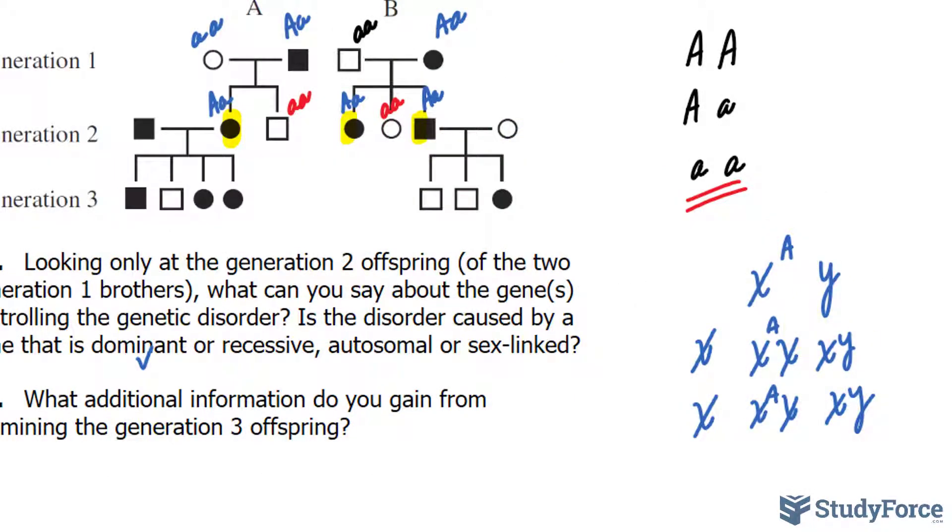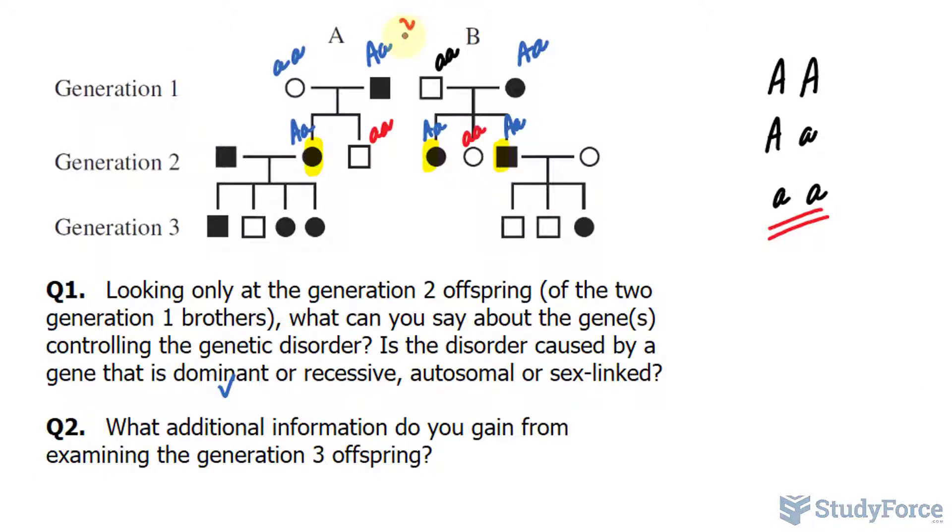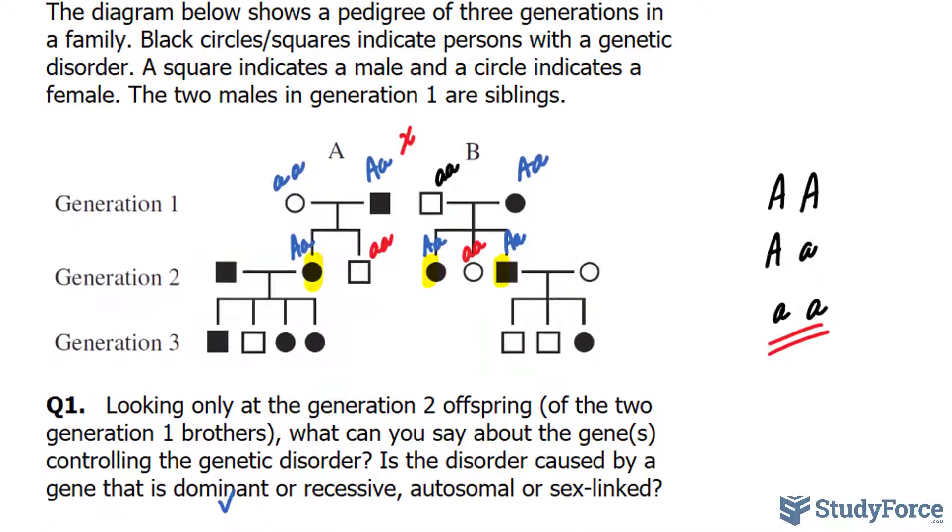This is consistent with their offspring here. This female is affected and we see that as a possibility. This male is not affected, also a possibility here. So it could be sex-linked if we just look at generation 2. I'll write down that it is possible he is XY with a capital A, and she is XX with no affected gene.